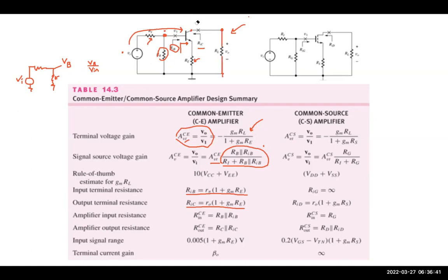Similarly, for the common source amplifier, the input is at the gate and the output is at the drain. The gain is gm·RL divided by one plus gm·RS due to source degeneration. We multiply this by the ratio v_gate over v_in to get the full gain v0 over v_in.